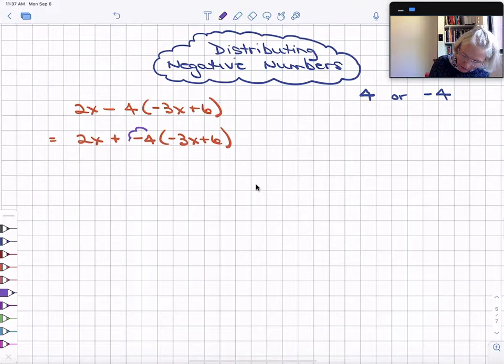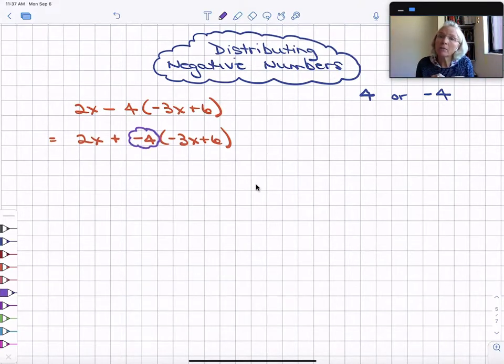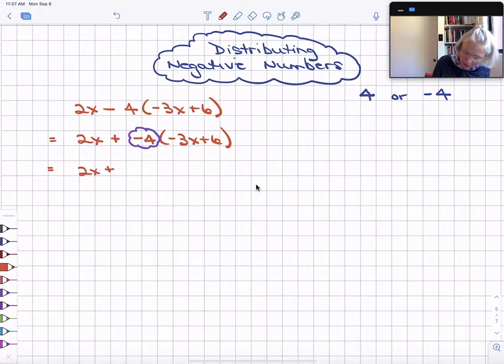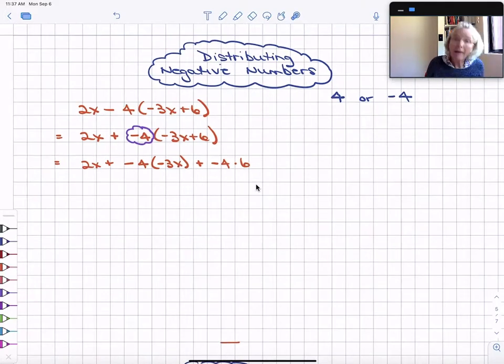it's very clear that the number, the multiplication we're going to be distributing over that addition is the multiplication by negative four. So let's go ahead and do that 2x plus negative 4 times negative 3x plus negative 4 times six.